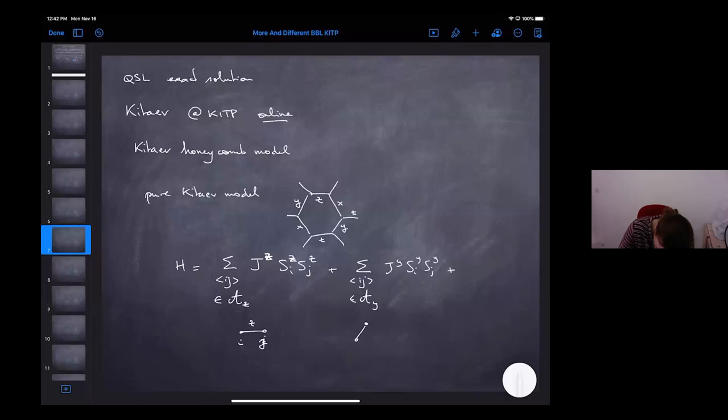Plus sum on all the bonds that are of type Y, J_Y S_i^Y S_j^Y, plus these guys which are in the X set, J_X S_i^X S_j^X. So not only did Kitaev provide the model, he also actually solved it. In order to solve it exactly, so it's an exact solution.